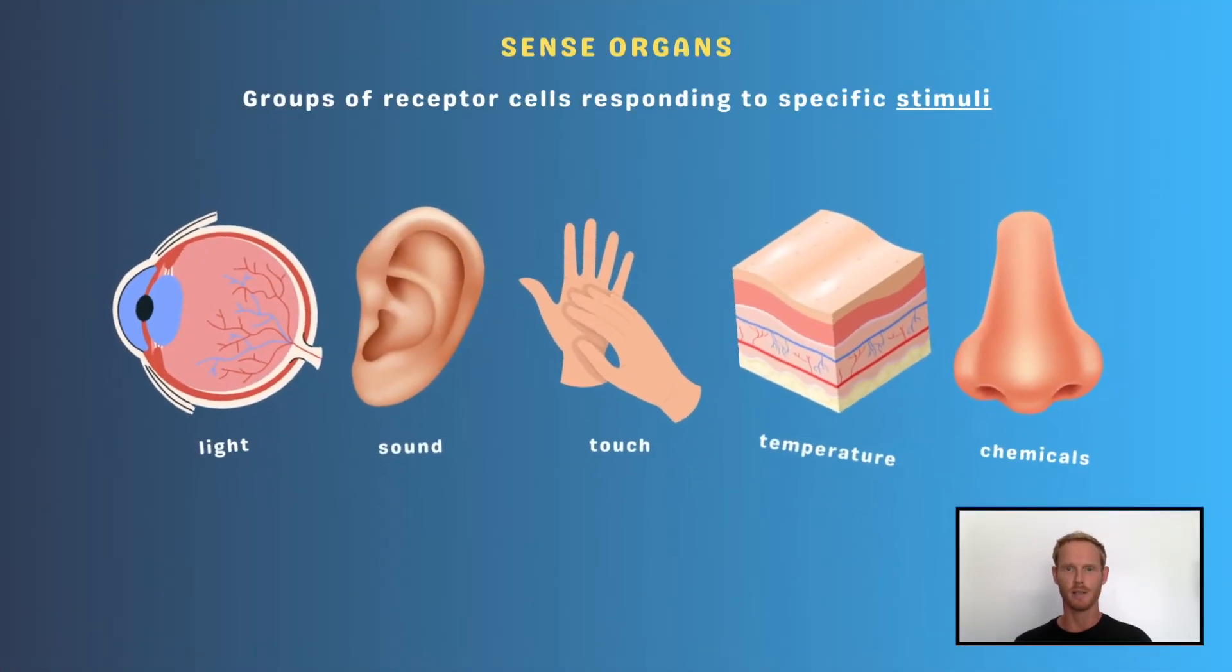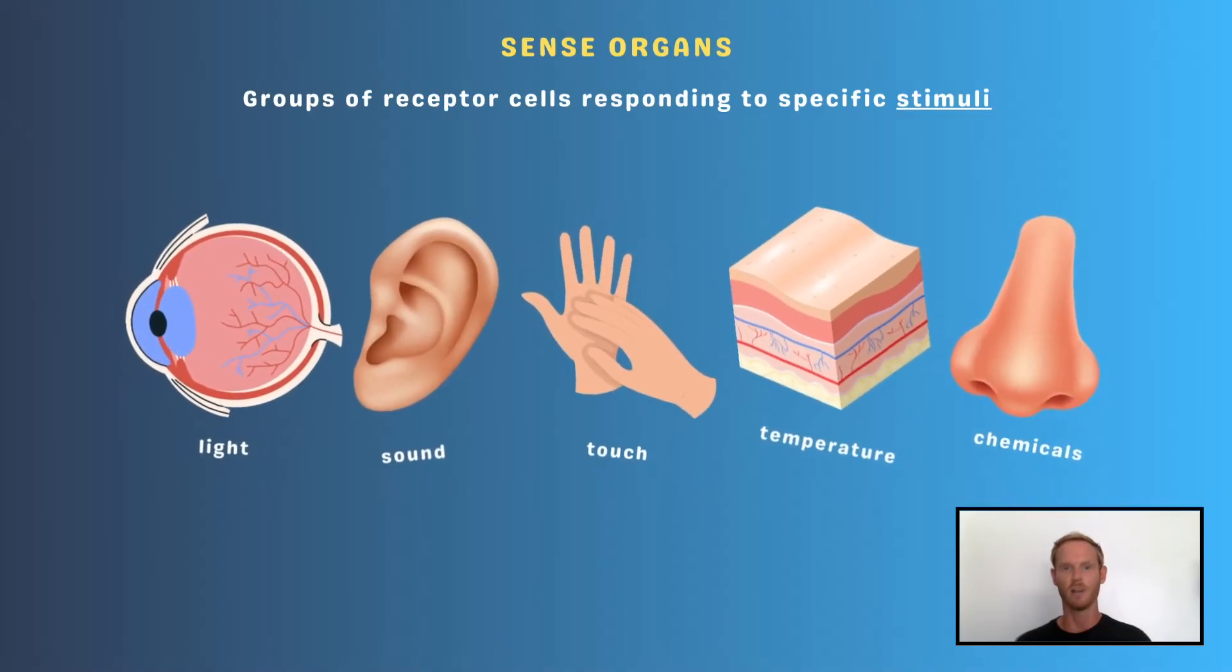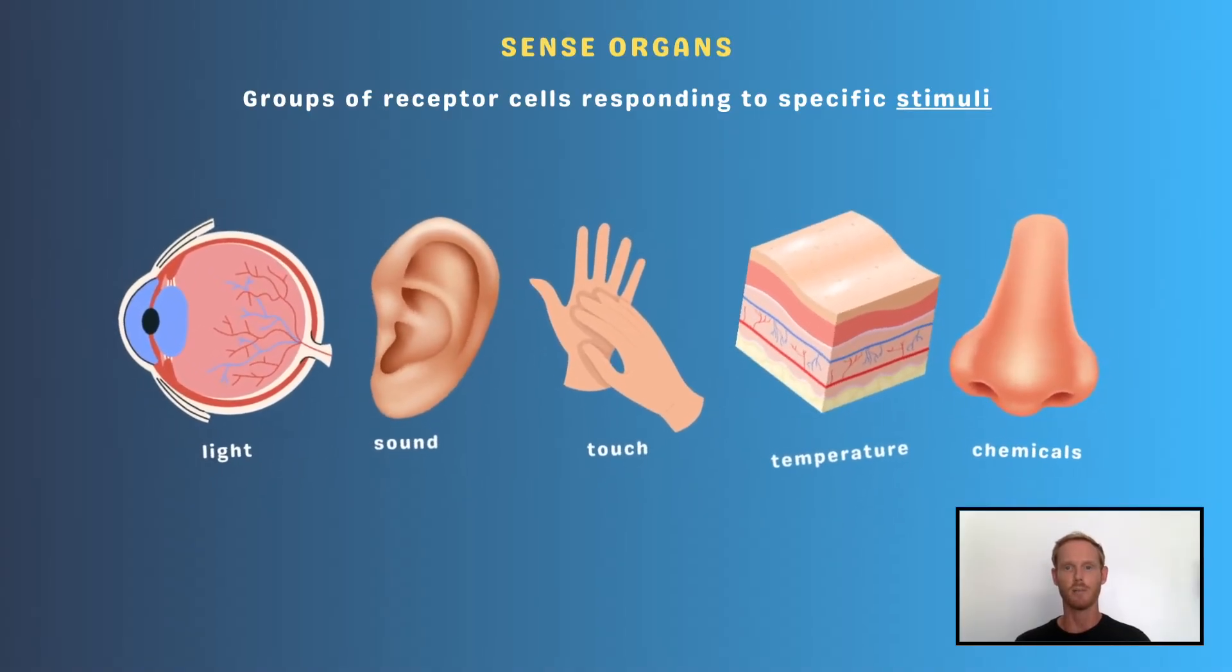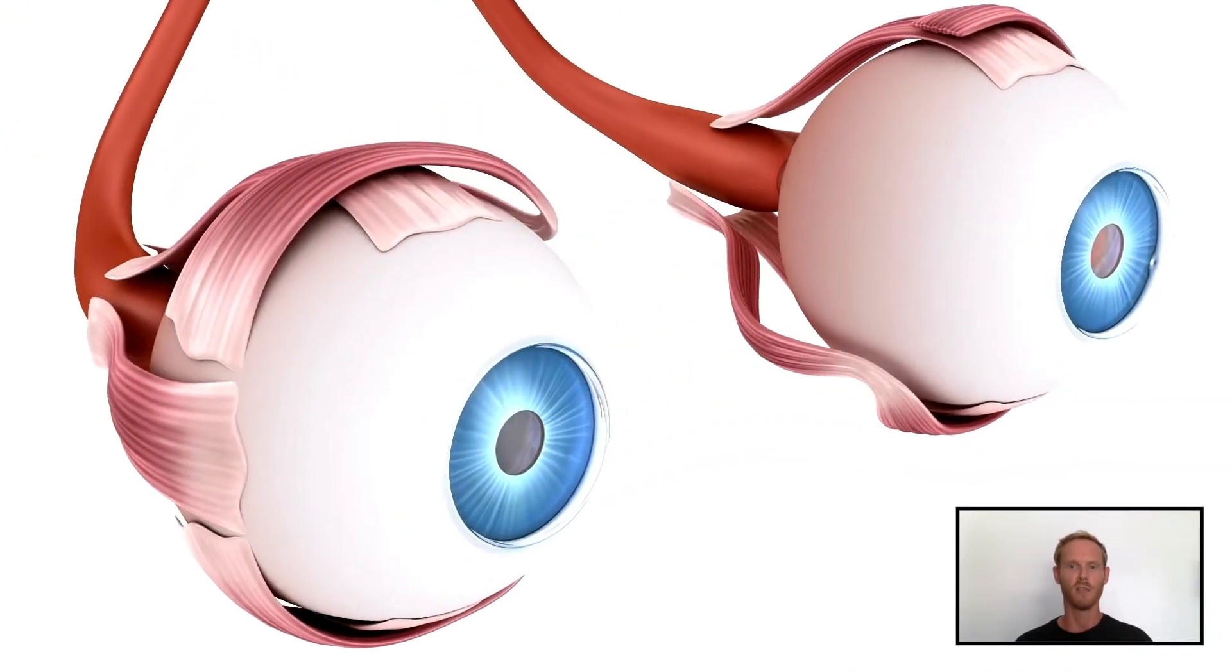Sense organs are groups of receptor cells that respond to specific stimuli or changes in the environment such as light, sound, touch, temperature, and chemicals. One specific sense organ is the eye, which will be the focal point of this lesson.